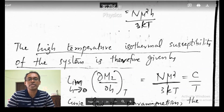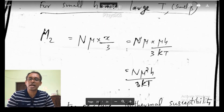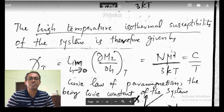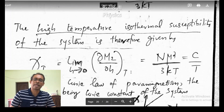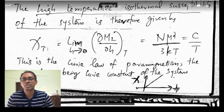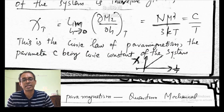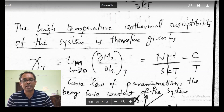So this is the high-temperature, low-field susceptibility. If I want to calculate susceptibility from the magnetization, psi(T) = (d/dH) of M_z = N mu² / (3 k_B T). So this is the susceptibility, equal to C/T, because N mu² / (3 k_B) is a constant. This constant is called Curie's constant and psi(T) is now inversely proportional to temperature. This is Curie's law of paramagnetism — susceptibility is inversely proportional to temperature. If I plot psi(T) against 1/T, I will get a straight line graph. The slope of the graph gives Curie's constant. So this is Curie's law of paramagnetism.